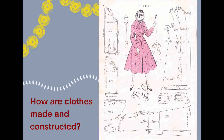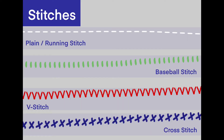Have you ever thought about how clothes are made and constructed? There's a lot of work which goes into making one single garment, and these are created with patterns. You can see the example of the lady wearing the coat — all around her are the parts and patterns for making that coat. Whoever made this has had to cut out all those little pieces in fabric before sewing them together.